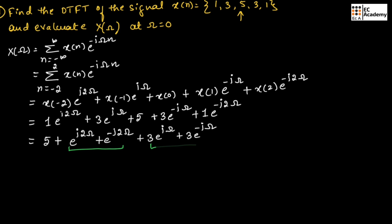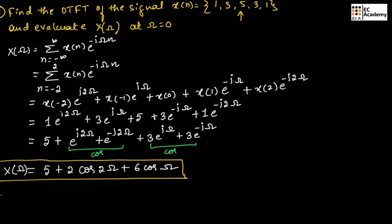These two pairs of terms can each be written in the form of a cosine signal. Therefore, the above equation becomes 5 plus 2 cos 2 omega plus 6 cos omega. This is the DTFT of the given sequence. Now at omega is equal to 0, X of omega will be equal to 5 plus 2 plus 6, which equals 13, since cos 0 is equal to 1.